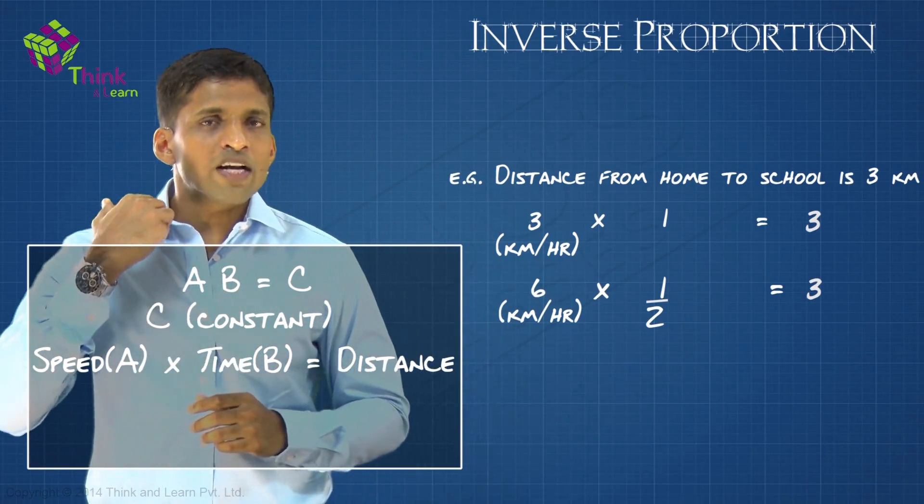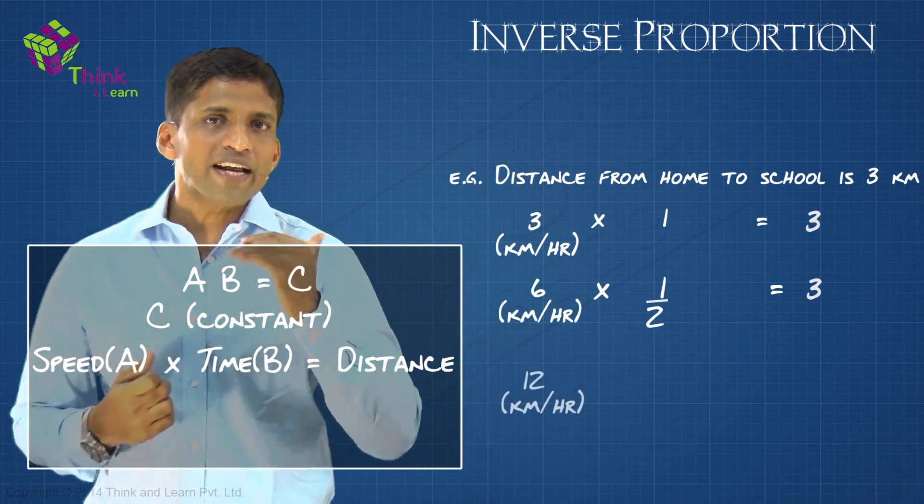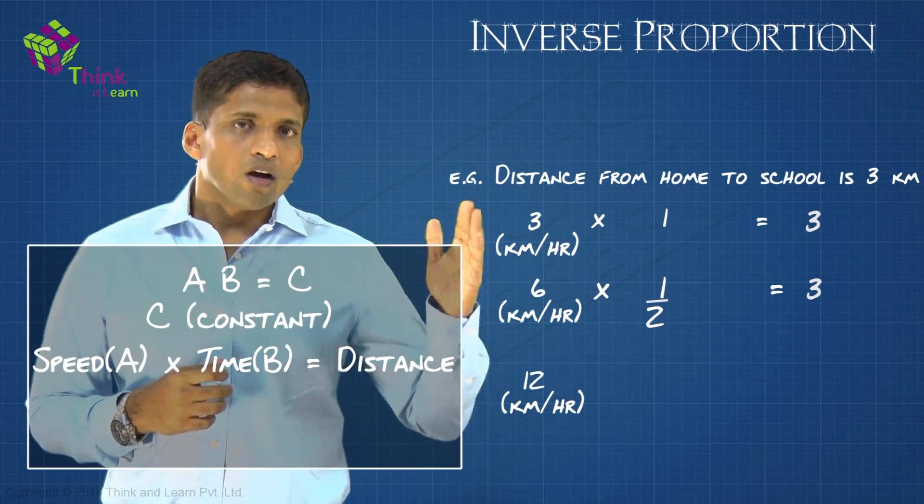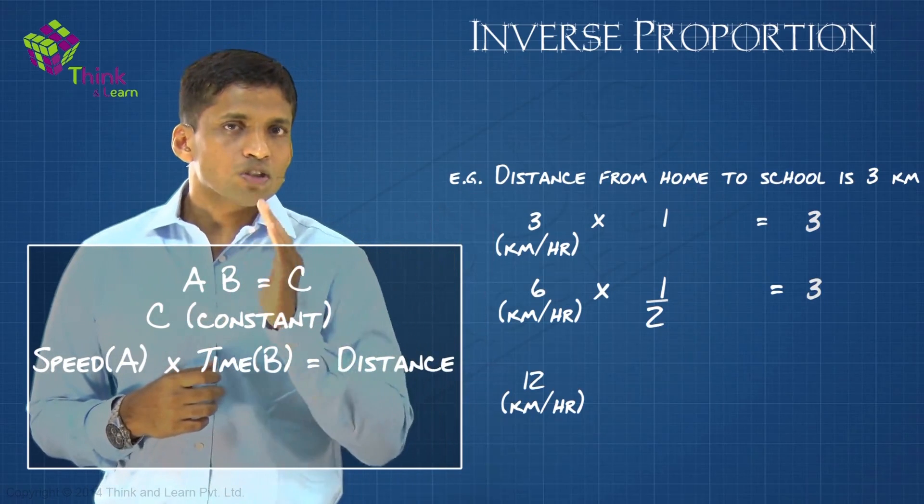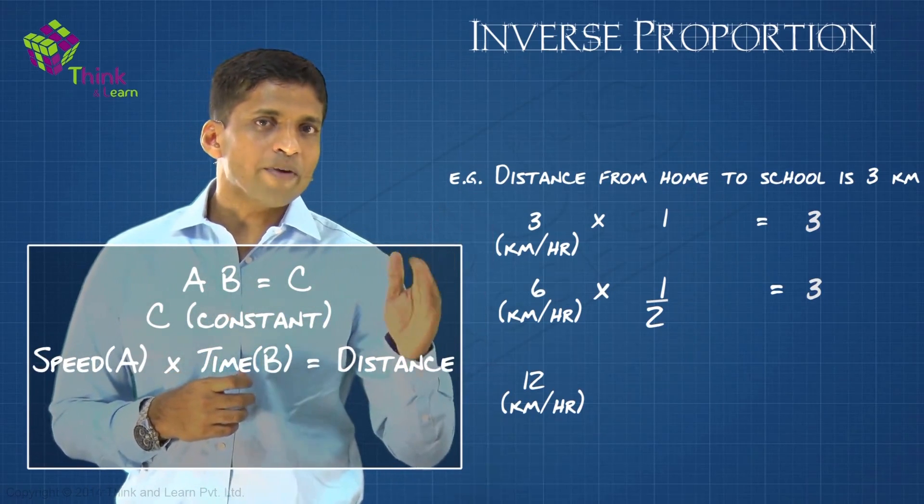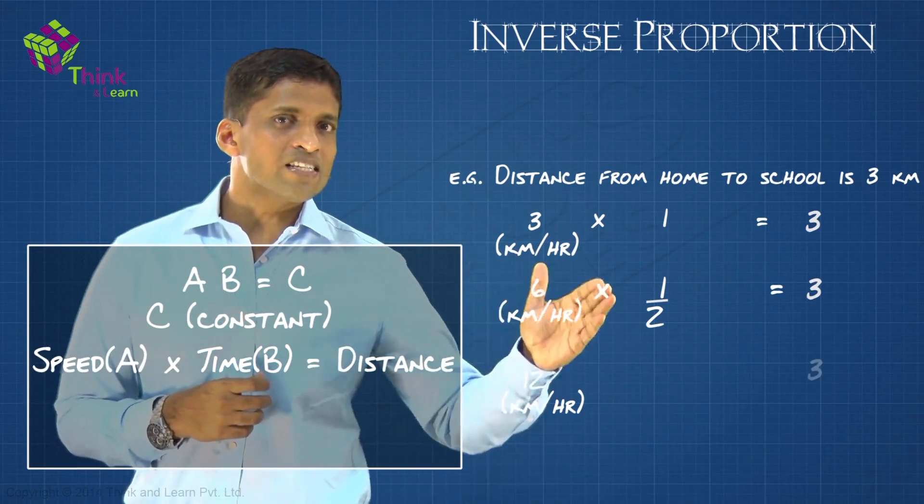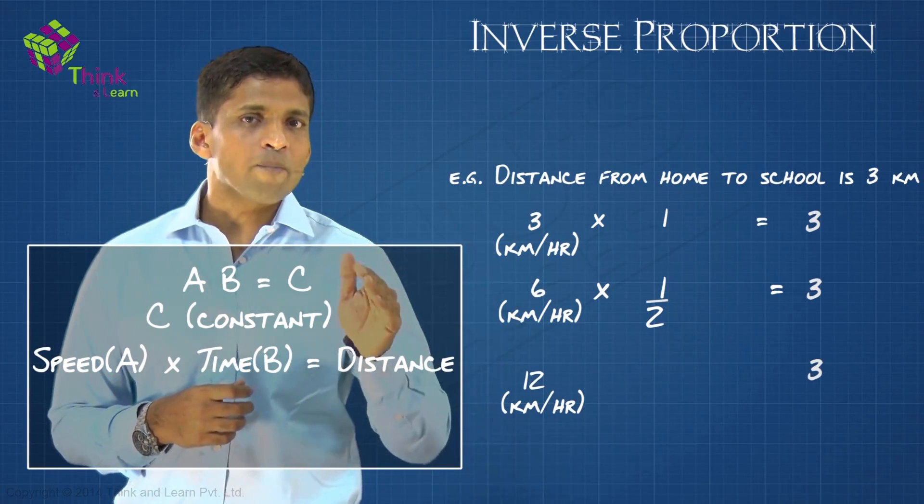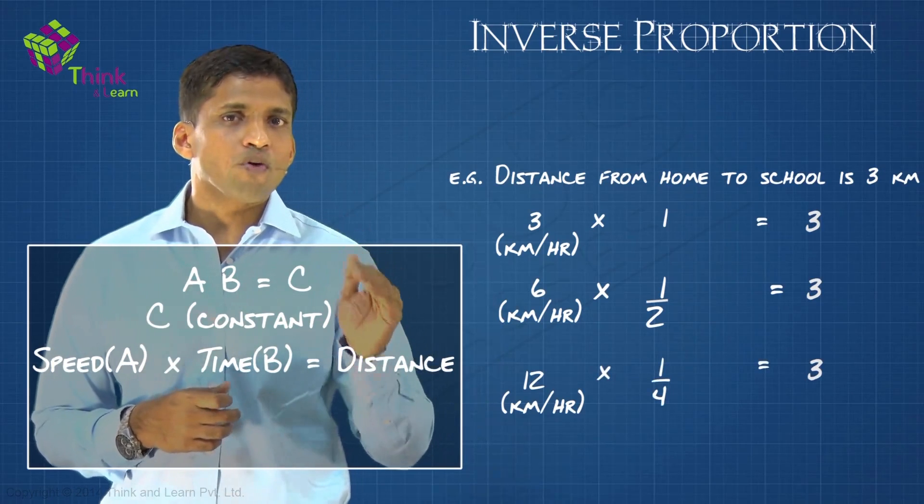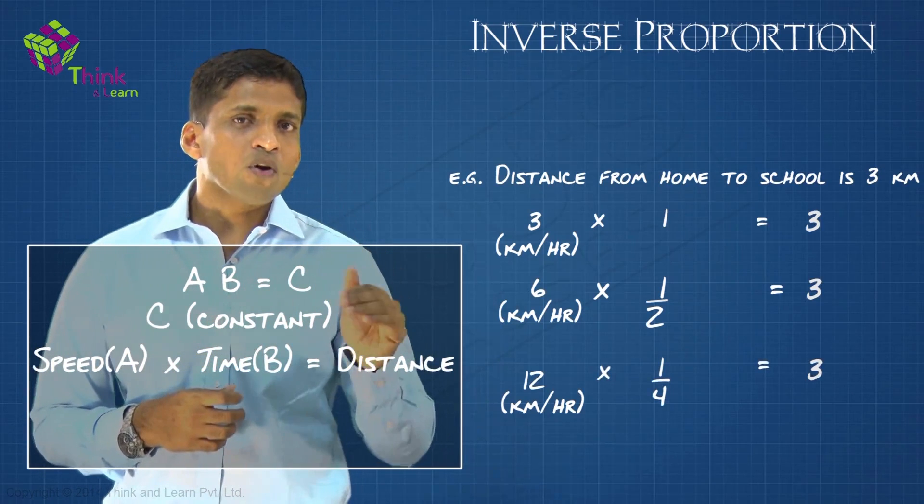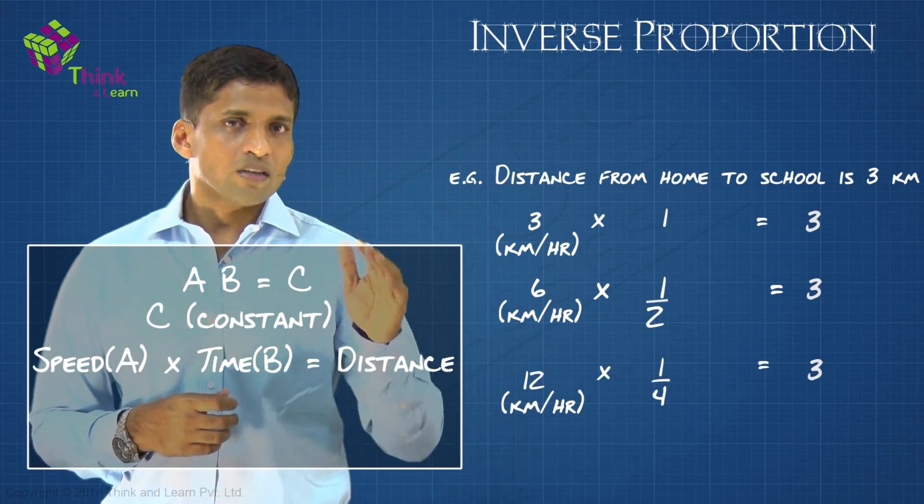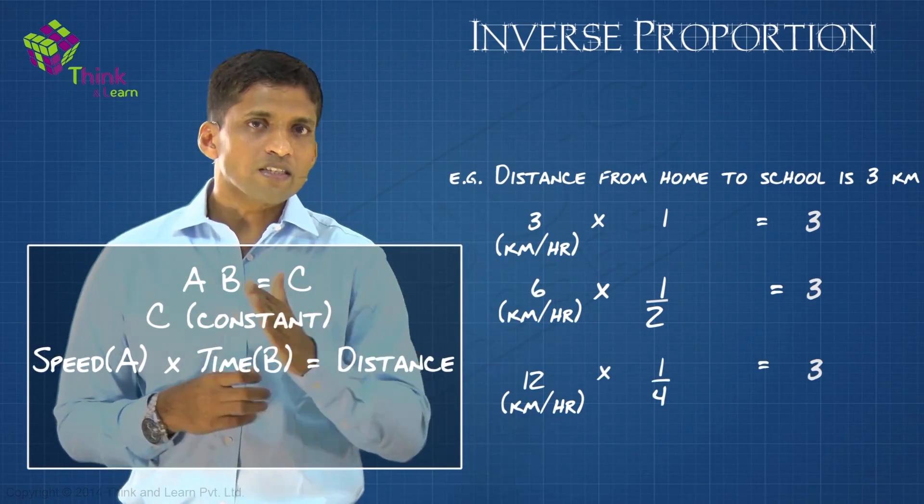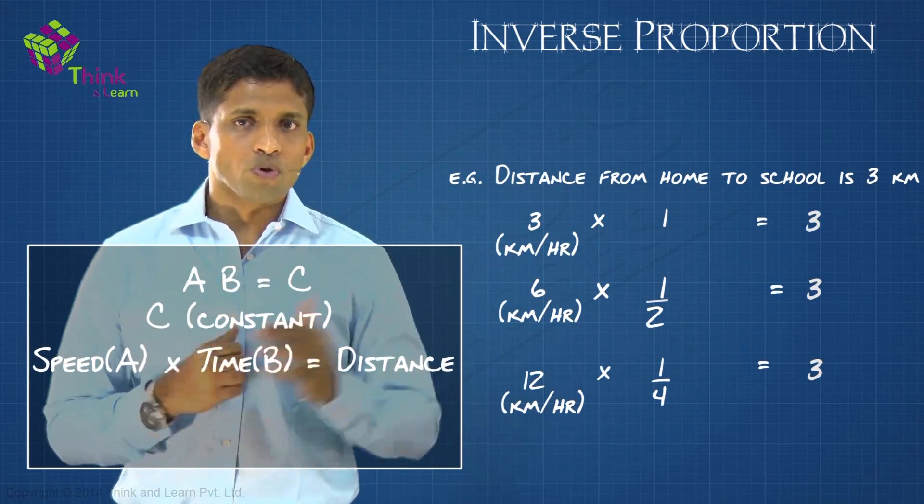Now, if you are cycling at 12 kilometers per hour, how much time will be taken? So 12 is here. We can easily find out the time taken because the right hand side is fixed at 3. So 3 by 12, you will get 1/4. That is 1 fourth of an hour, which is actually 15 minutes. You will complete the distance from home to school.